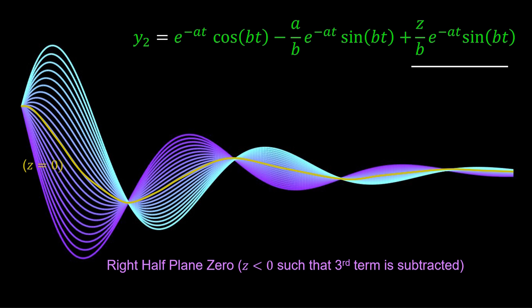With the zero in the left half plane, Z is greater than zero, so the third term is added. This is why the transient response overshoots as Z becomes larger.